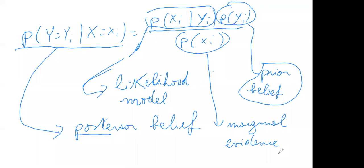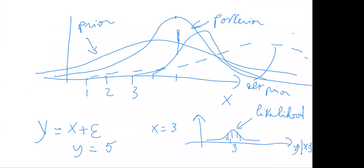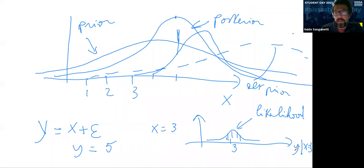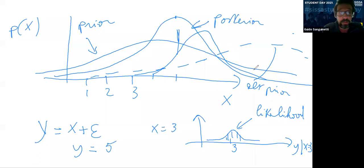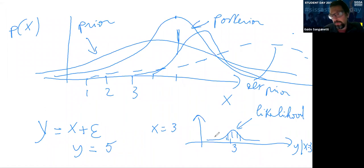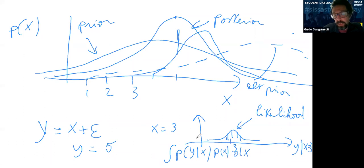Question: can we plot the marginal probability on the same graph? The marginal probability would be the probability of Y, not of X. So if I have Y equals five regardless of what X is, it would be plotted on a Y-axis and given by the integral of P(Y | X) times P(X) dX. It would probably be something rather broad as well.